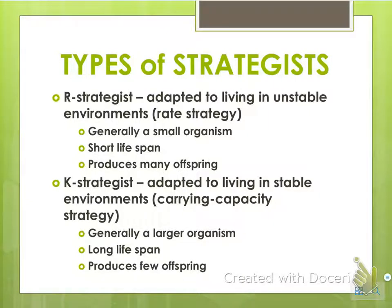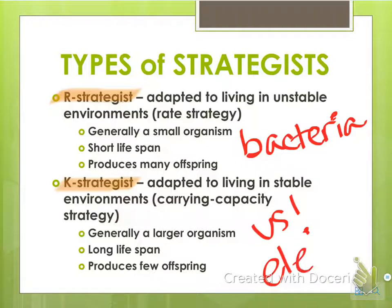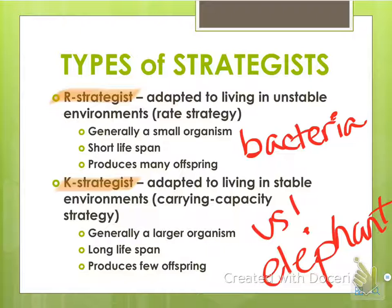There are two types of reproductive strategists: R strategists and K strategists. R strategists live in unstable environments — they are usually small, have a short lifespan, and produce many offspring. Insects and bacteria are classic examples. K strategists live in stable environments and use a carrying capacity strategy — they are larger, have a long lifespan, and few offspring. Humans and elephants are examples of K strategists, whereas bacteria, some insects, and smaller fish are R strategists.